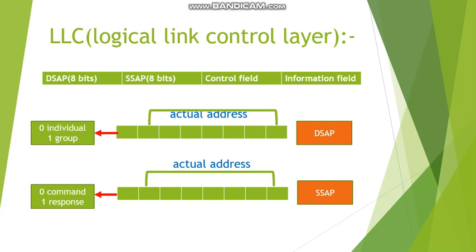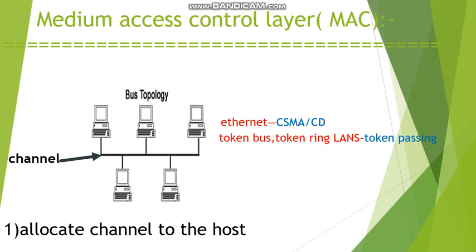The responsibility of the MAC sublayer is to allocate channels to hosts for data transmission and to take the channels back when the transmission is complete. There are several strategies for allocation and deallocation of channels. For example, Ethernet uses CSMA/CD, and the token passing method is used for token ring and token bus LANs.